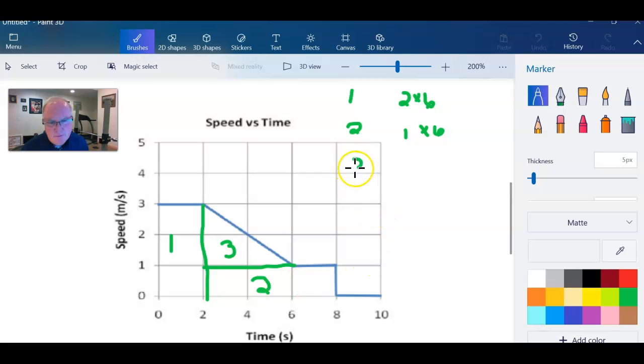And then for part number three, this part right here, well, we have a height of two and we have a base of two, four, four. But remember, for a triangle, it's one half the base times the height. So we'll take one half of that.